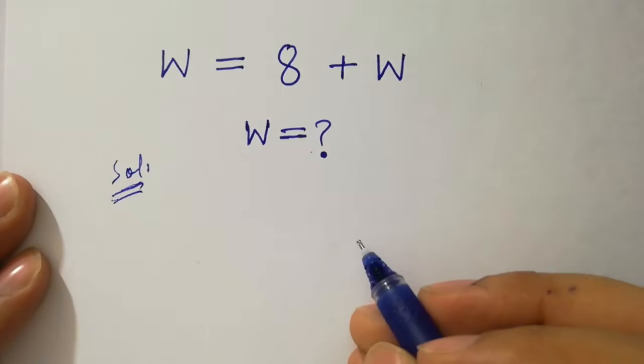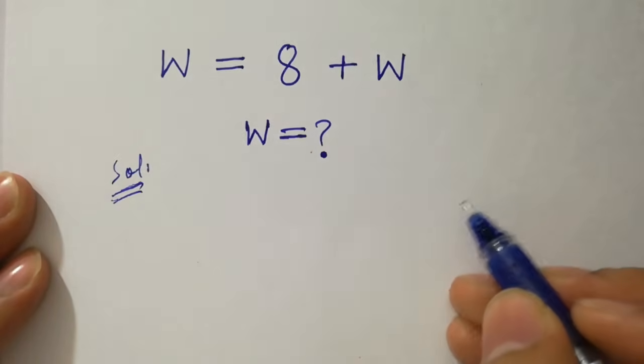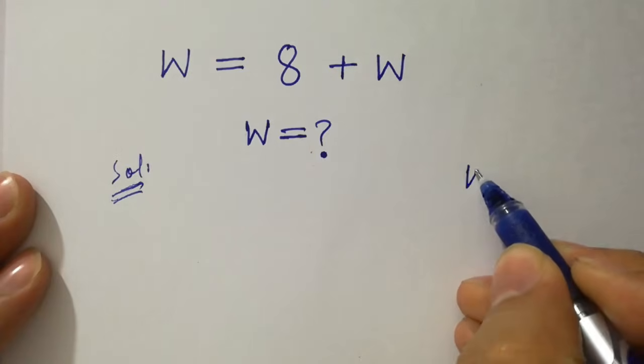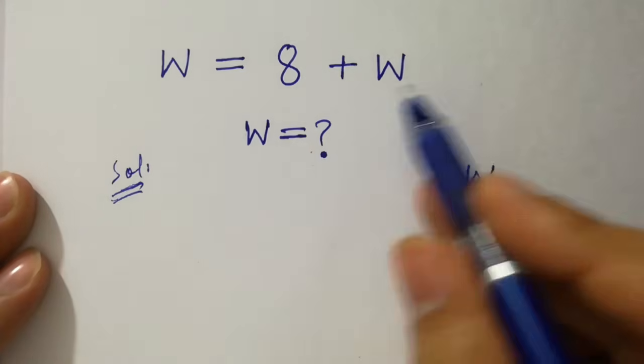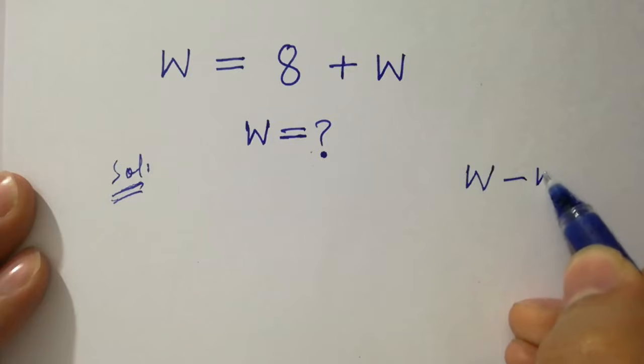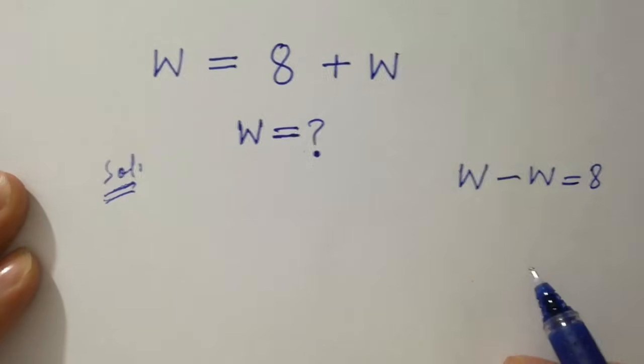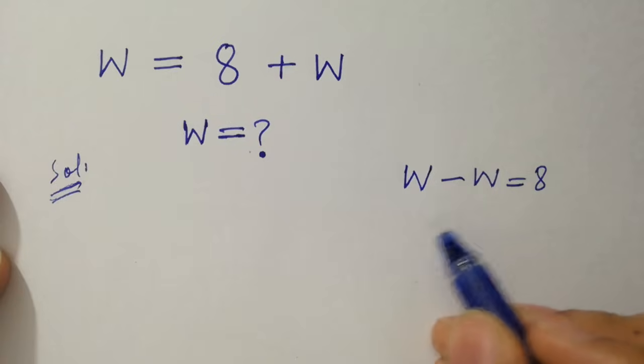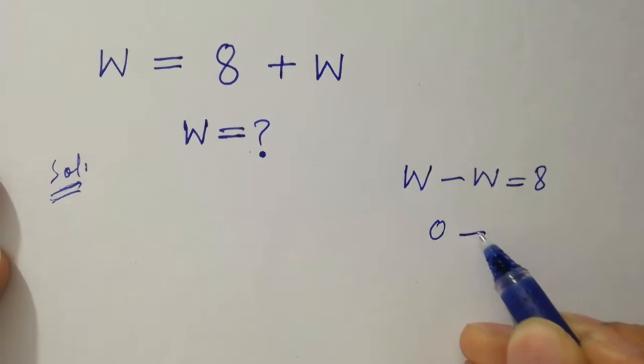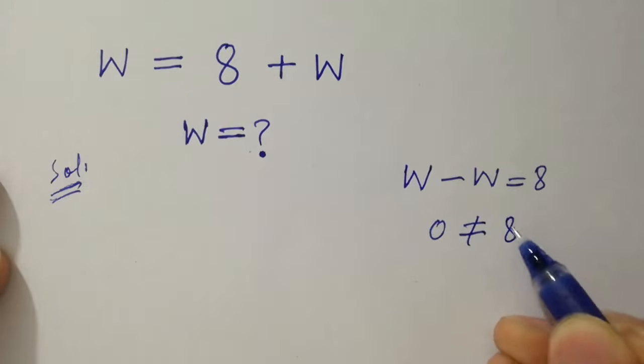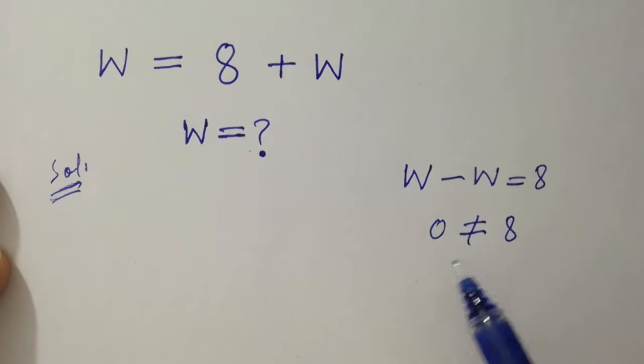If you solve this problem, you can see here w minus w equals to 8. Then we have here w minus w is 0 which does not equal to 8, which shows that this problem has no solution and no any real solution here. This is empty set.